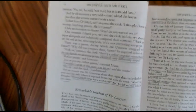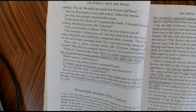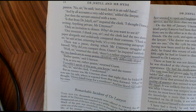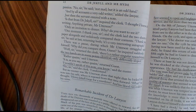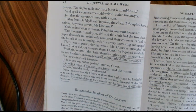One moment — and the clerk laid the two sheets of paper alongside and sedulously compared their contents. 'Thank you, sir,' he said at last, returning both. 'It's a very interesting autograph.' There was a pause during which Mr. Utterson struggled with himself. 'Why did you compare them, Guest?' he inquired suddenly. 'Well, sir,' returned the clerk, 'there's a rather singular resemblance. The two hands were many points identical, only differently sloped.' 'Rather quaint,' said Utterson. 'It is, as you say, rather quaint,' returned Guest. 'I wouldn't speak of this note, you know,' said the master. 'No, sir,' said the clerk, 'I understand.' But no sooner was Utterson alone that night than he locked the note into a safe where it reposed from that time forward. 'What,' he thought. 'Henry Jekyll forged for a murderer' — and his blood ran cold in his veins.